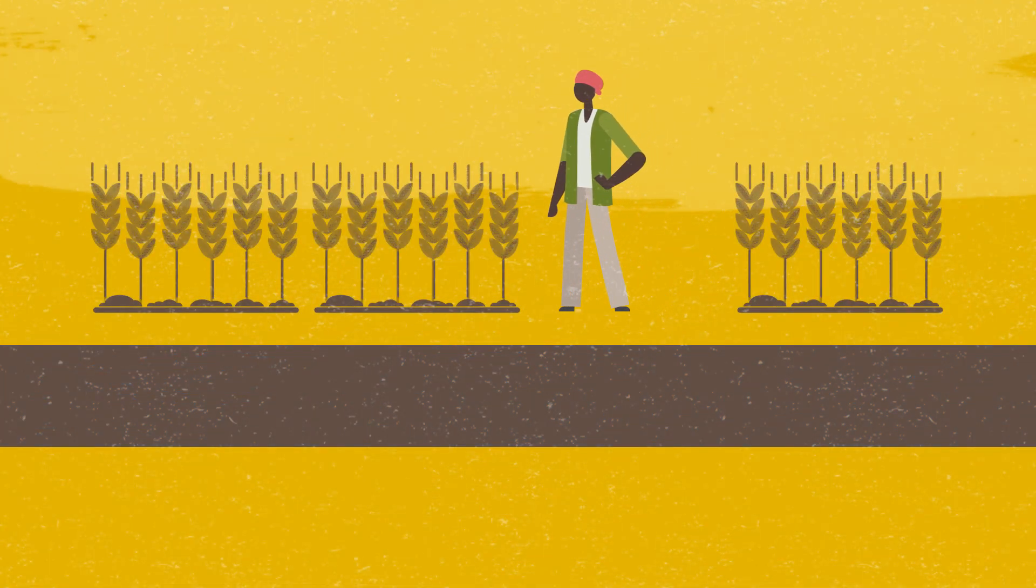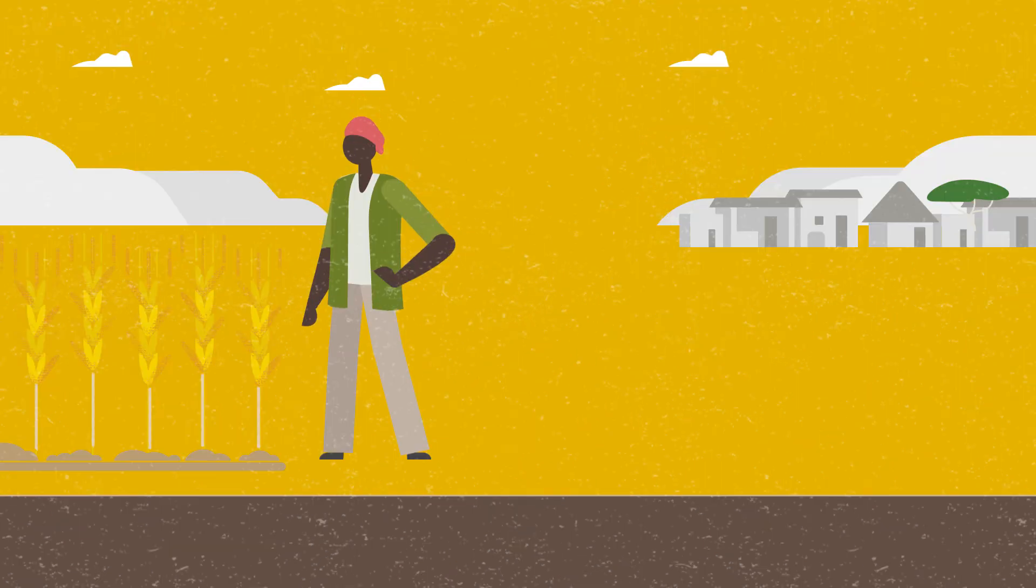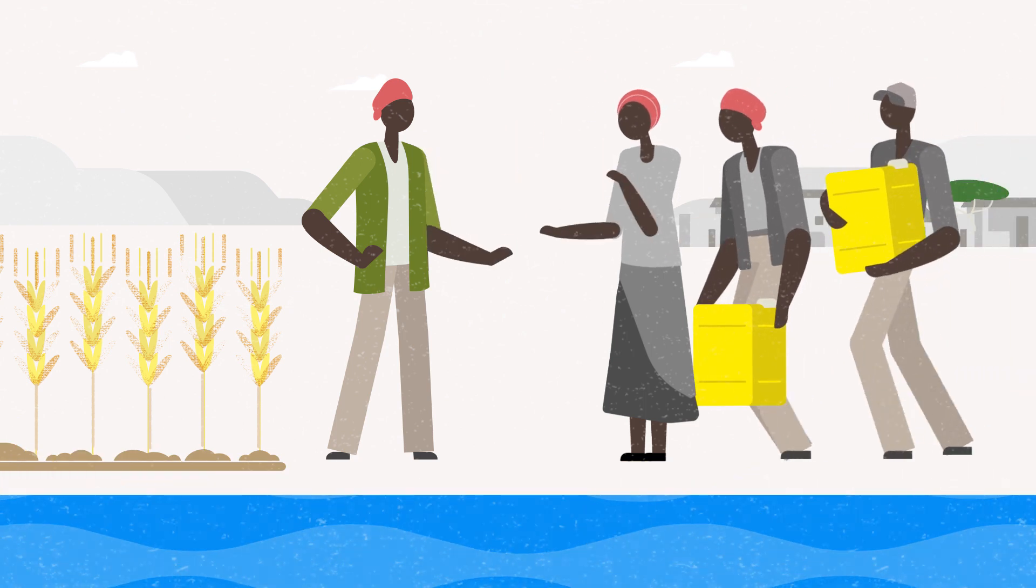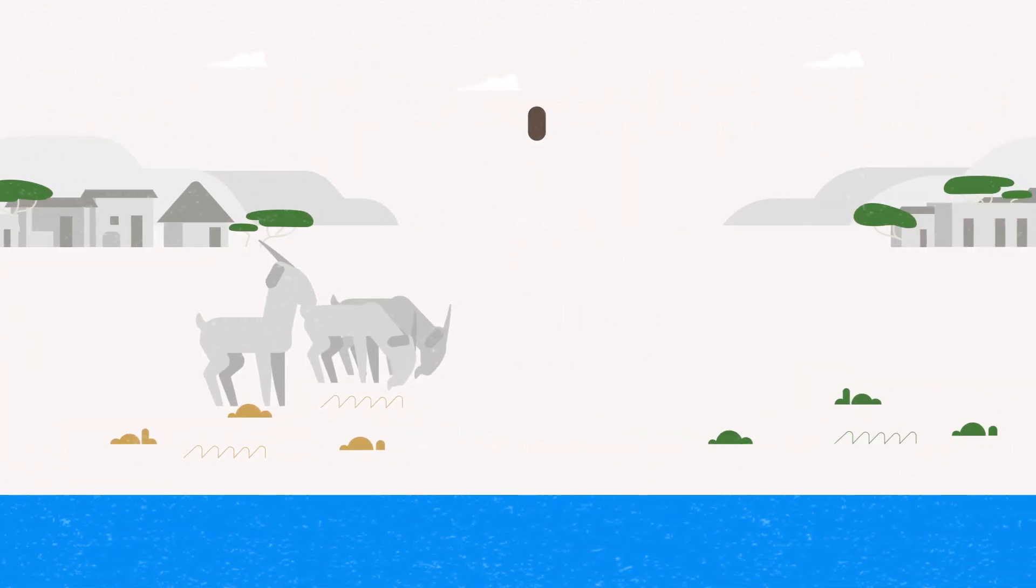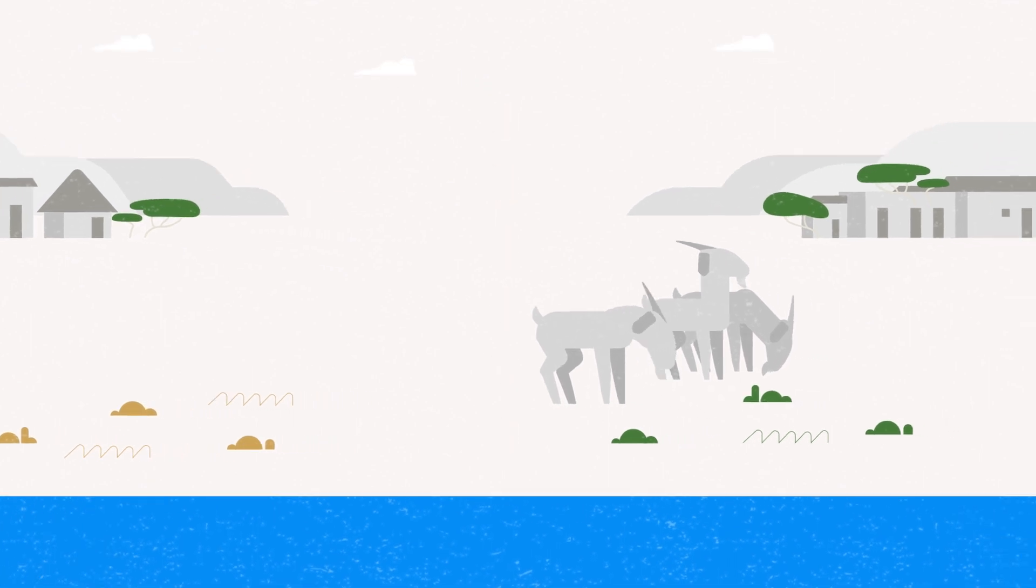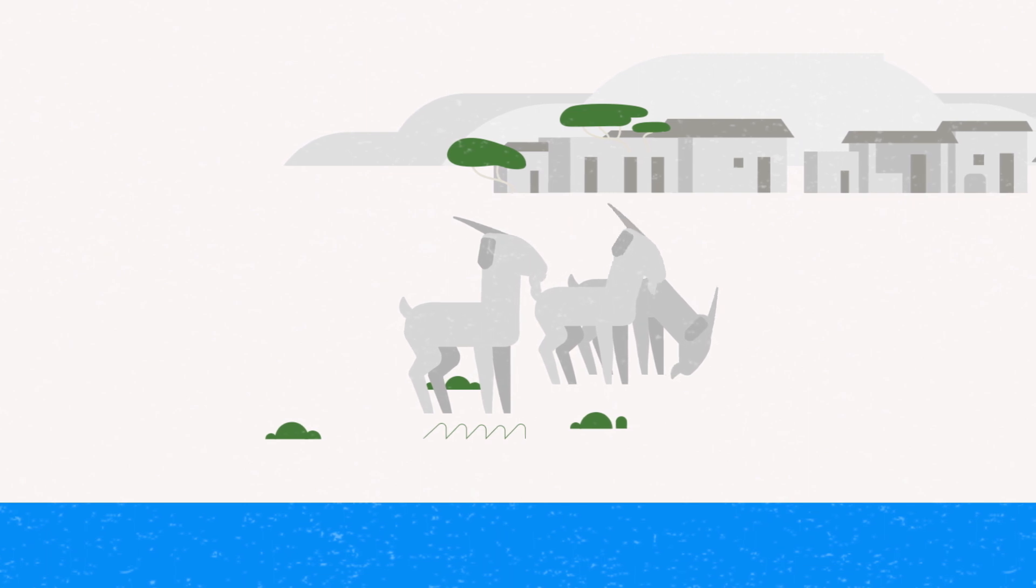When the region was beset by a severe drought, those communities who had built trust with others and developed resource-use arrangements were better able to adapt to those environmental stresses. Pastoralists could move their livestock through territory controlled by their former adversaries to find better grazing opportunities or to sell their animals at market.